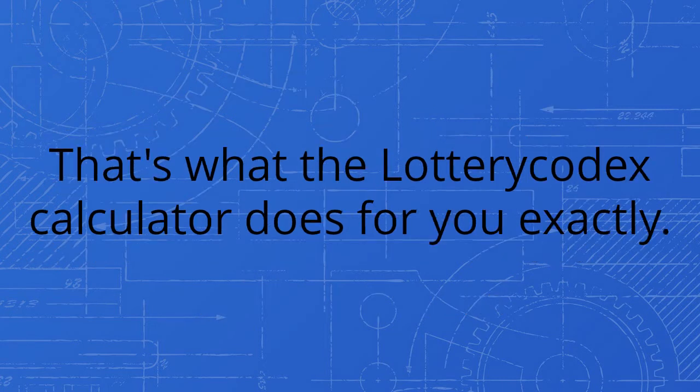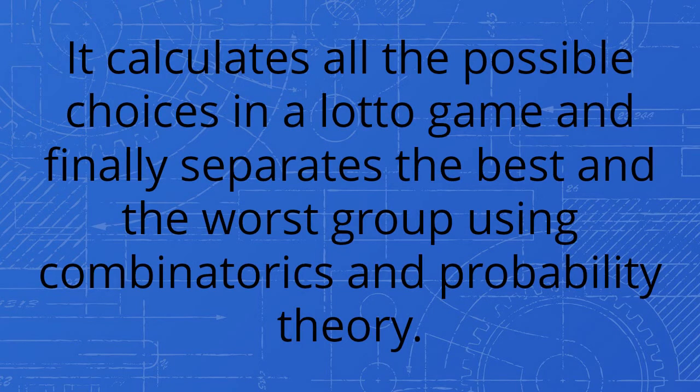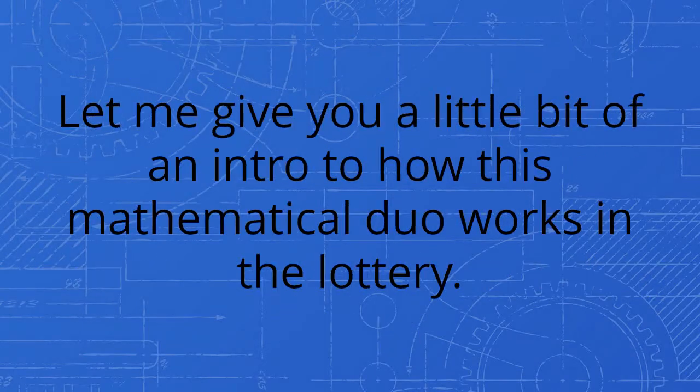That's what the Lottery Codex calculator does for you exactly. It calculates all the possible choices in a lotto game and finally separates the best and the worst group using combinatorics and probability theory. Let me give you a little bit of an intro to how this mathematical duo works in the lottery.